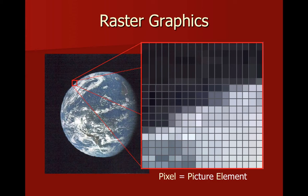In other words, a picture element — an element that makes up your picture. When we go to save a raster image, the file size will be determined by the number of pixels in our grid. So, the larger our graphic is, or the more pixels we have, the larger the file size is going to be.